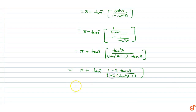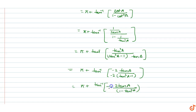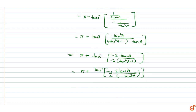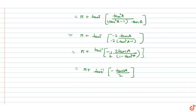Multiplying and dividing by -2, we get pi plus tan inverse of (-2 tan a)/(1 - tan square a), with a factor of 1/2. Since 2 tan a/(1 - tan square a) equals tan 2a, this becomes pi plus tan inverse of (-tan 2a / 2).